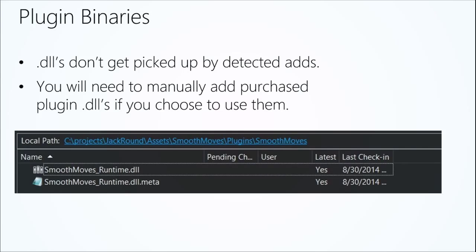Make sure you go through those adds and ignore the files that you need to ignore — you can right-click the file that needs to be ignored and ignore it. The plugin checked in is Smooth Moves; we decided instead of rolling our own animation system we'll buy one this time. It doesn't check in DLLs automatically, so you'll have to go and manually add those like we did with the initial check-in. Make sure you go through and look for any binaries that get added to your project, especially from plugins from the asset store.